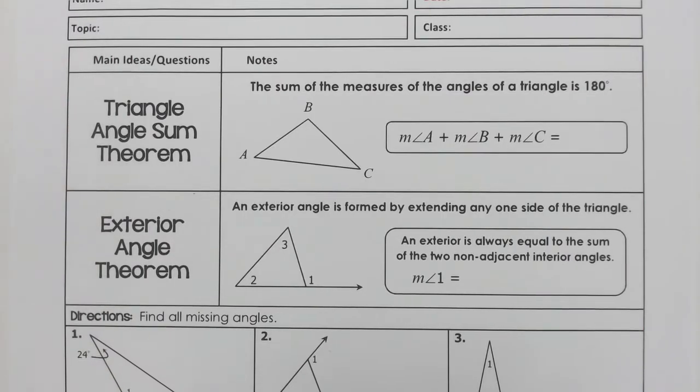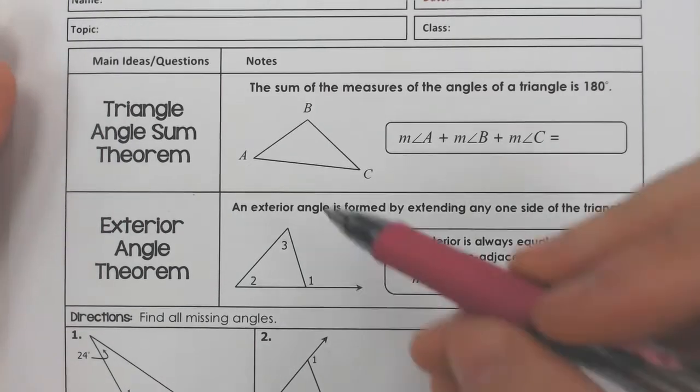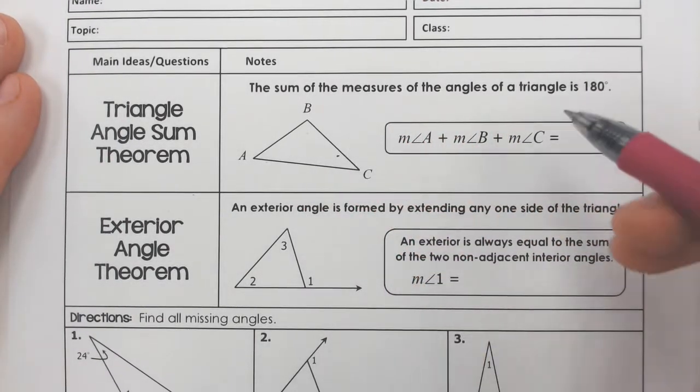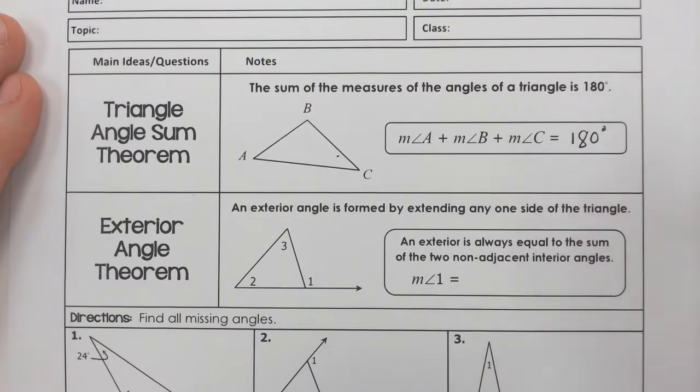So a triangle, any triangle, not just special ones but all triangles, if you add up every single angle, their measurements will always add to equal 180 degrees. That is 100% all the time.